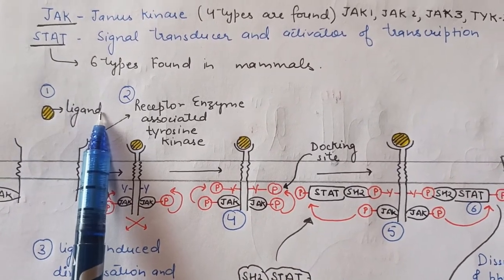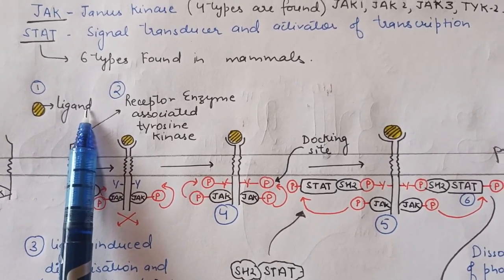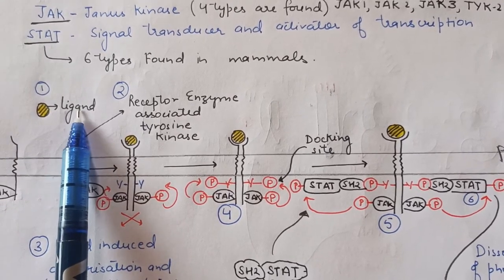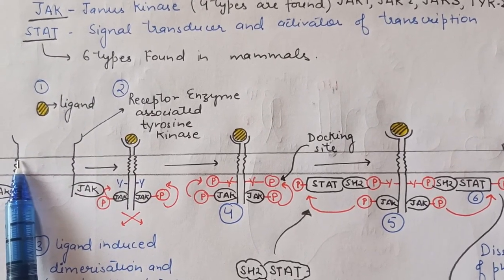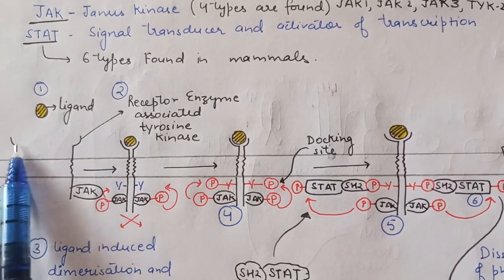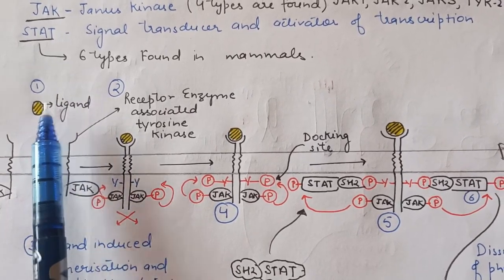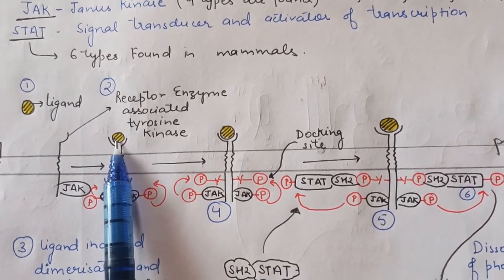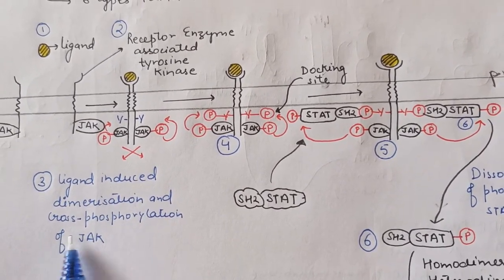Now, the ligand can be cytokines, growth factors, growth hormones, or peptide hormones — these are the ligands that bind to the cytokine receptors. These receptors are single transmembrane alpha-helix receptors. Initially they are present at a distance apart, but as the ligand binds with them, this leads to ligand-induced dimerization and cross-phosphorylation of JAK.